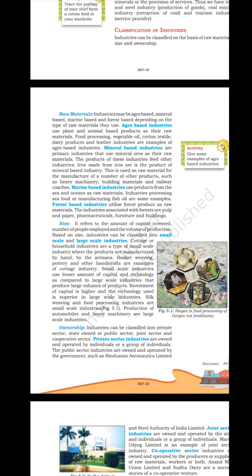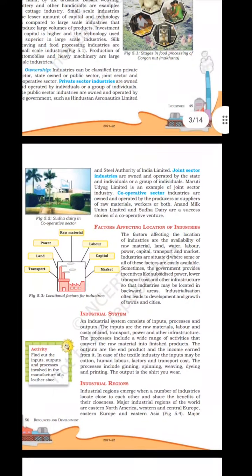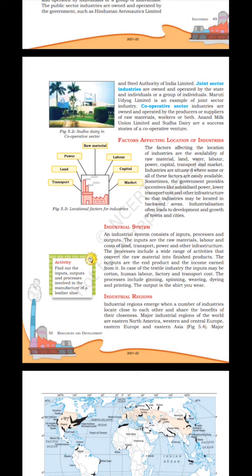Ownership: Industries can be classified into private sector, state-owned or public sector, joint sector and cooperative sector. Private sector industries are owned and operated by individuals or a group of individuals. Public sector industries are owned and operated by the government, such as Hindustan Aeronautics Limited and Steel Authority of India Limited. Joint sector industries are owned and operated by the state and individuals together. Anand Milk Union Limited is a success story of a cooperative venture.